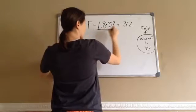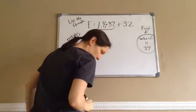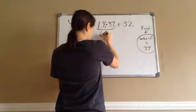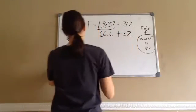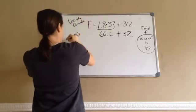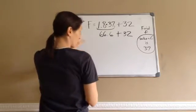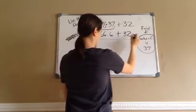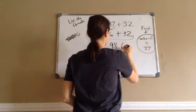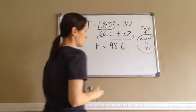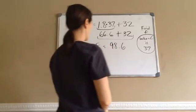So, let's do it. 1.8 times 37 is 66.6. And then I just bring down the 32. So, I'm doing multiplication, no dividing. Now, I'm going to add or subtract. And we're adding. So, final answer is 98.6. F equals 98.6. See how we did that?